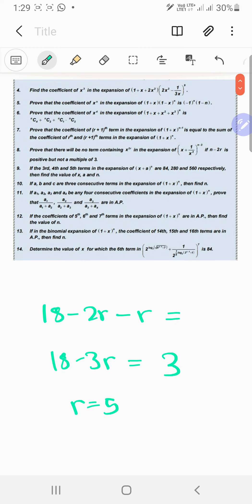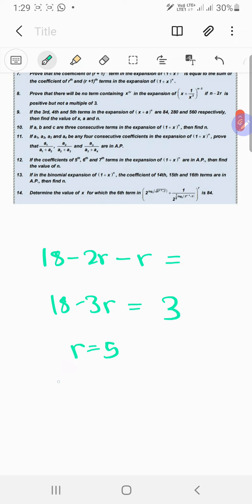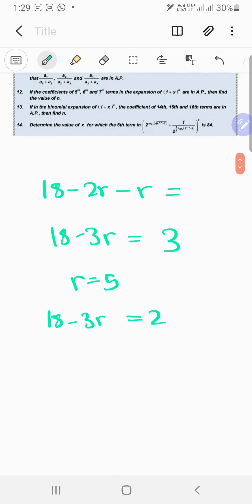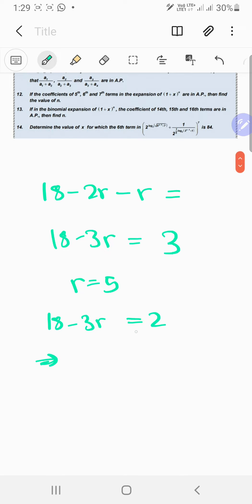And then for the next one, when you put x over there, you should get 18 minus 3r, that should be equal to 2. So that will give me like 16 equals 3r, that doesn't make sense. I mean like, you will not get like an integer over there.